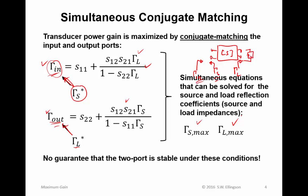There's no guarantee that the two-port is stable under these conditions — stability is a separate consideration. In general, you should first confirm stability, or unconditional stability preferably. If it's unconditionally stable, whatever solution you get will work. However, if it's conditionally stable, you have to be a little careful. You can run this procedure, but then you should check that the resulting source and load impedances give a stable result. You have to make sure you're doing this in a situation where the result is associated with a stable outcome.